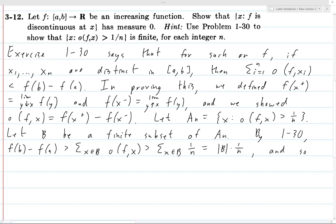So the number of elements in B times 1 over n. And so we can solve this for the size of B. And we get that |B| is less than n times (f(b) minus f(a)).